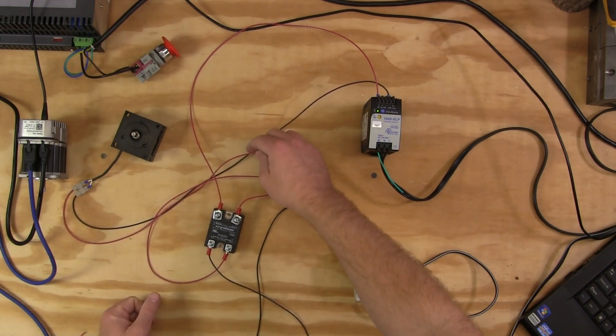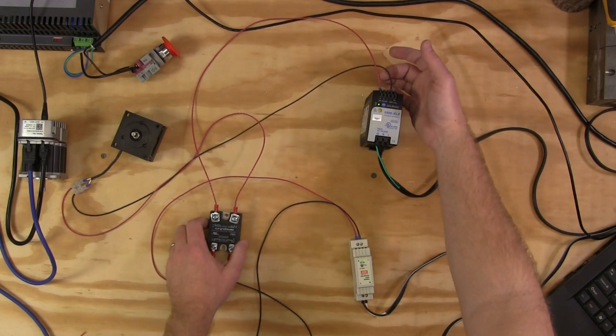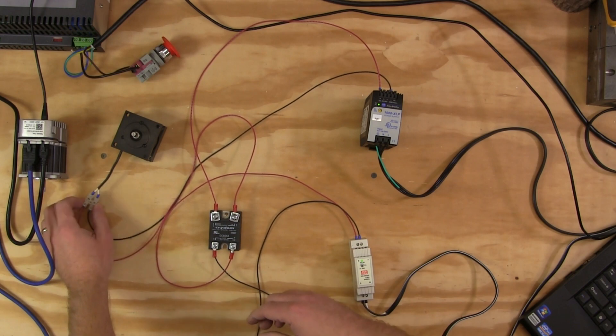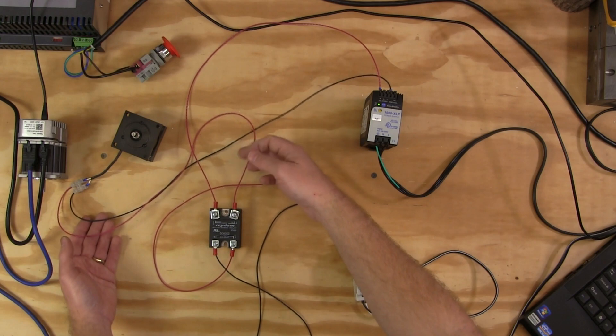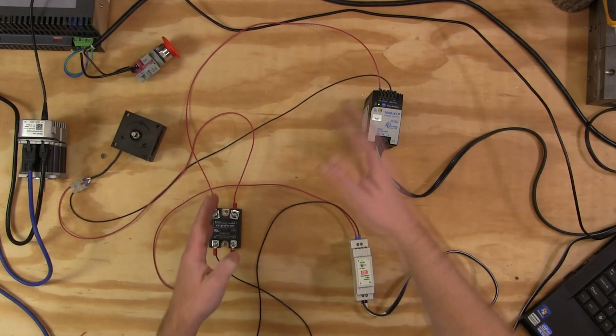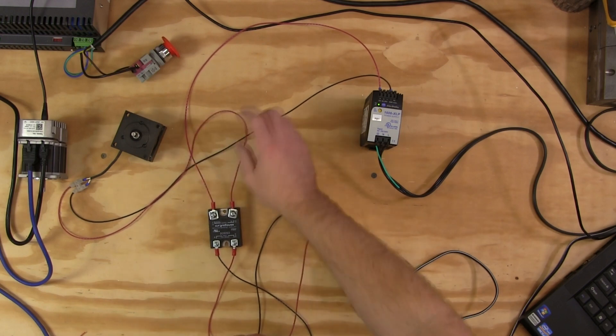The negative 24 coming out of the power supply goes directly to the other connector on the brake. So all the relay is doing is breaking the positive 24 in between the power supply and the brake as seen right there.